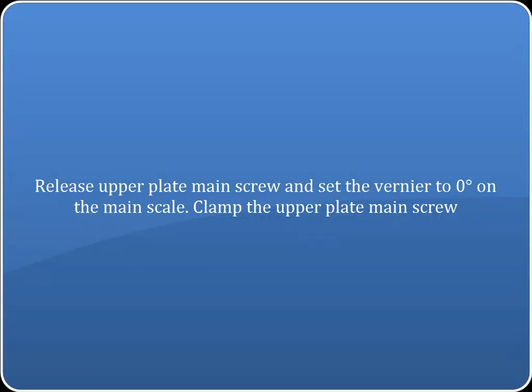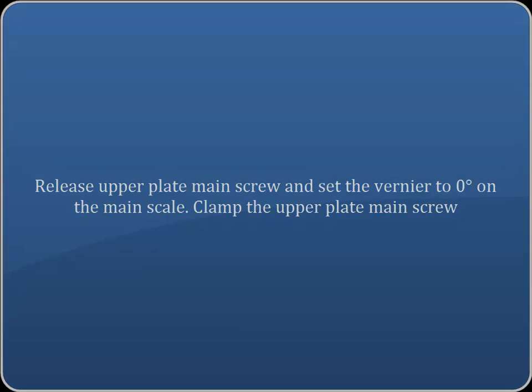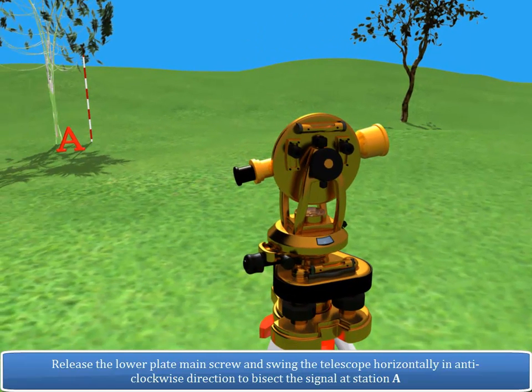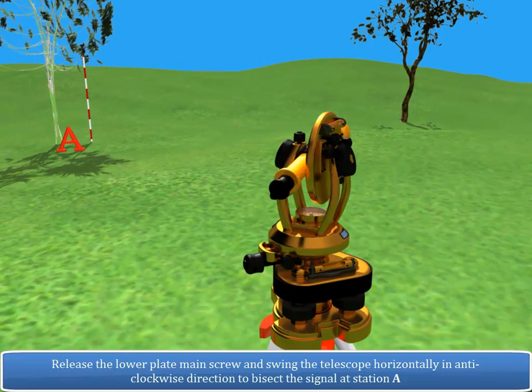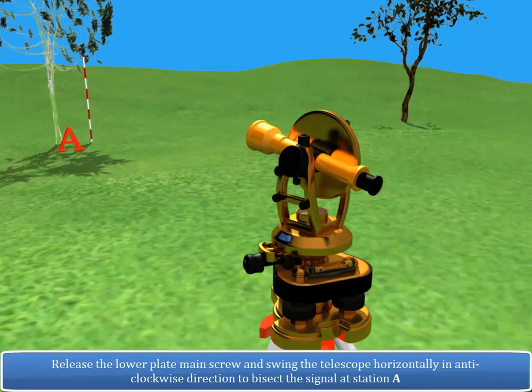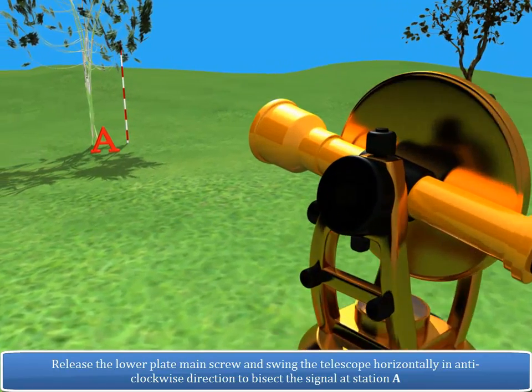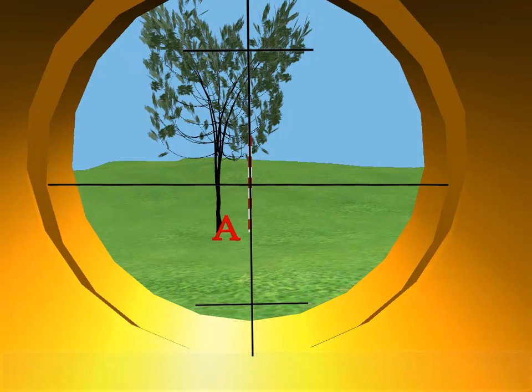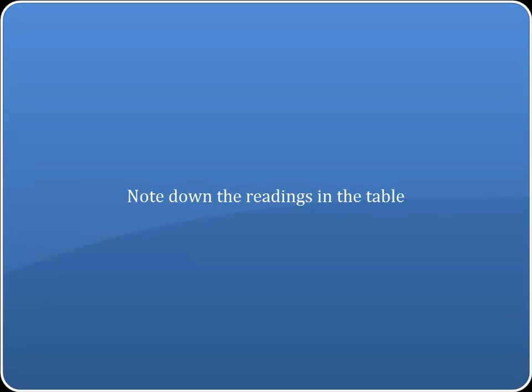Release the lower plate main screw. Release upper plate main screw and set the vernier to 0 degrees on the main scale. Clamp the upper plate main screw. Release the lower plate main screw and swing the telescope horizontally in anti-clockwise direction to bisect the signal at station A. Tighten the lower clamp screw and use the lower plate tangent screw for exact bisection of the station A. Note down the readings in the table.